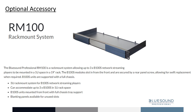The RM100 is a rack-mount system allowing up to three B100S units to be mounted in a 19-inch 1U rack space. The B100S units are mounted from the front and secured with a screw that is included with the B100S. Two blanking panels are included with the RM100 and are easily removed due to the use of magnetic tabs when additional units are added.